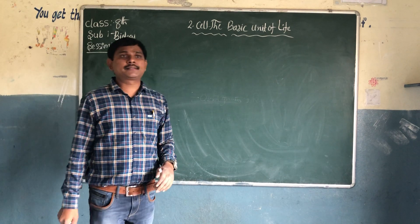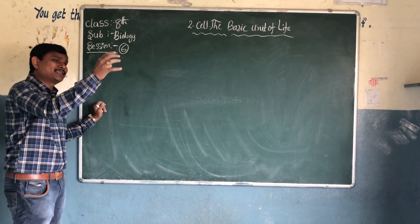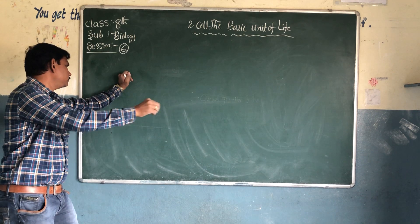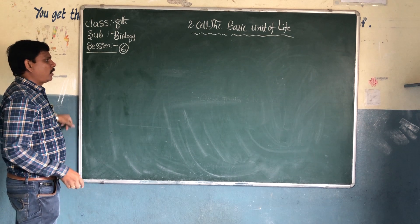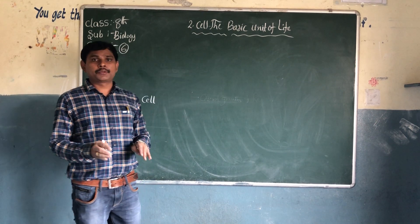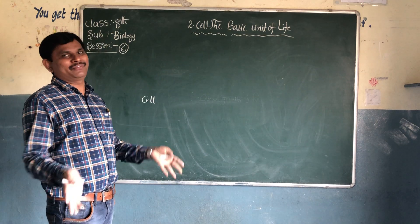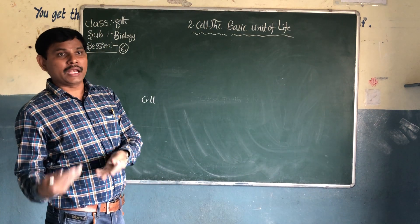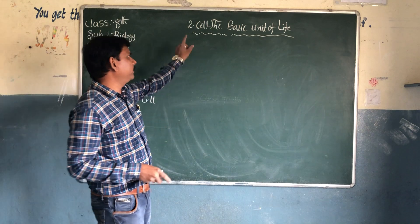Today we start 'Cell: The Basic Unit of Life.' Before discussing this, what is a cell? How is the cell formed? The first two cell lessons talk about how cell is the basic unit of life. It means without cell there is no life — whether it is plants, animals, or microorganisms. Whatever life is there, that life begins with the cell.